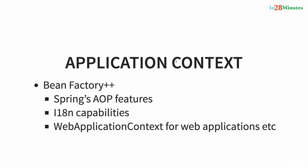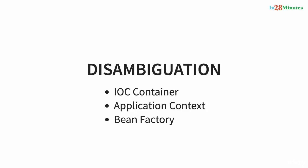Spring recommends using application context in all situations except when memory is at a premium — for example, on an IoT device where available memory is very limited. In those situations you can use a bean factory, but in all typical enterprise application scenarios go with application context. In this short video we had a discussion about what is an IoC container, what is application context, and how it is different from a bean factory. Until the next step, bye bye.